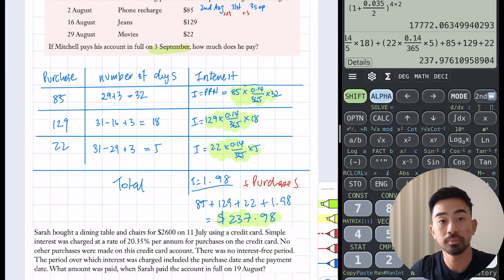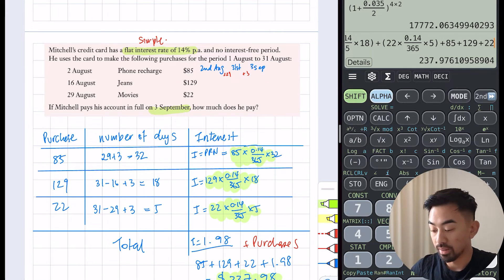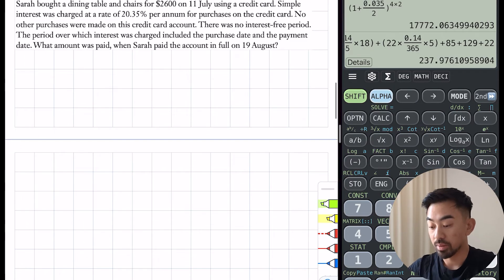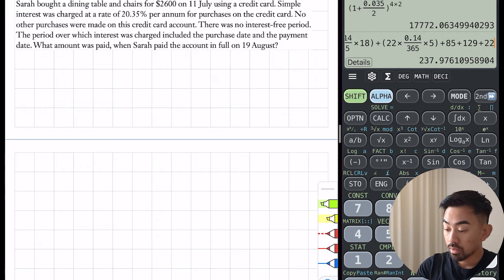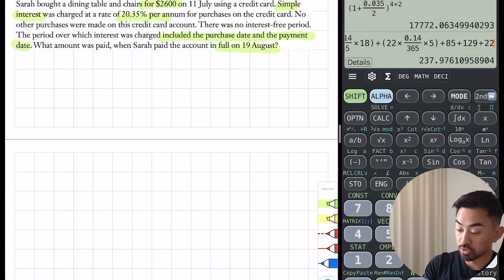Sarah bought a dining table and chairs for $2,600 on the 11th of July using a credit card. Simple interest was charged at a rate of 20.35% per annum. No other purchases were made, there is no interest-free period, and the period over which interest was charged included the purchase date and the payment date. What amount was paid when Sarah paid the account in full on the 19th of August? There are things you need to tease out. Because there's only one purchase, I'm not going to draw a table. I'm going to highlight: simple interest, that's my rate, there's my principal, I need to pay it back on the 19th of August, and it includes the day of purchase and payment.